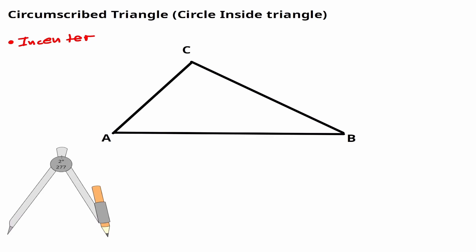Remember how do we find the incenter? The incenter is the intersection of the angle bisectors. So essentially what we want to do here is bisect every single angle within this triangle. So let's do that.